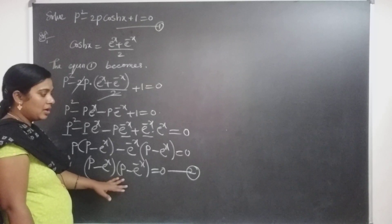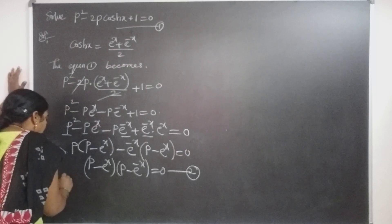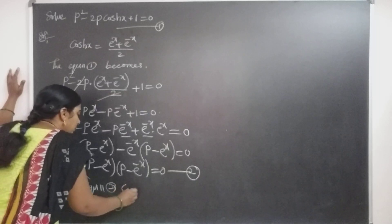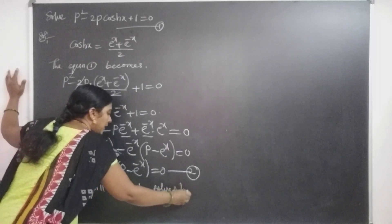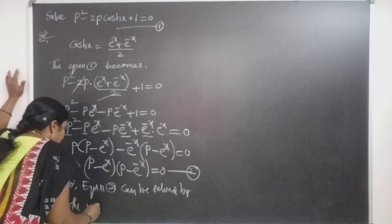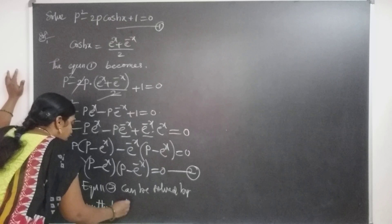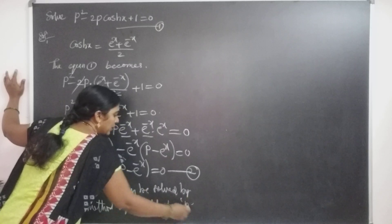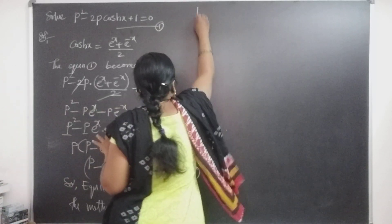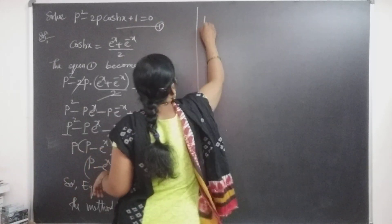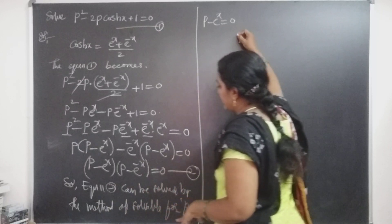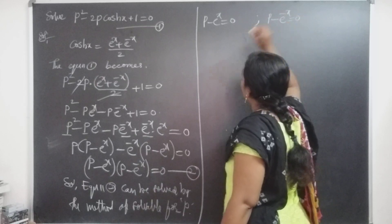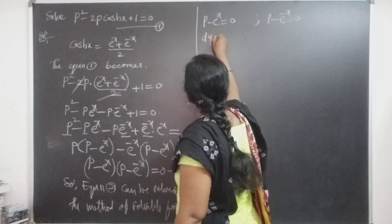The given first order but not first degree equation has been clearly split into factors of the first degree in p, so equation 2 can be solved by the method of solvable for P. Taking each factor equal to zero: (p - eˣ) = 0 and (p - e⁻ˣ) = 0. Recalling that p = dy/dx.